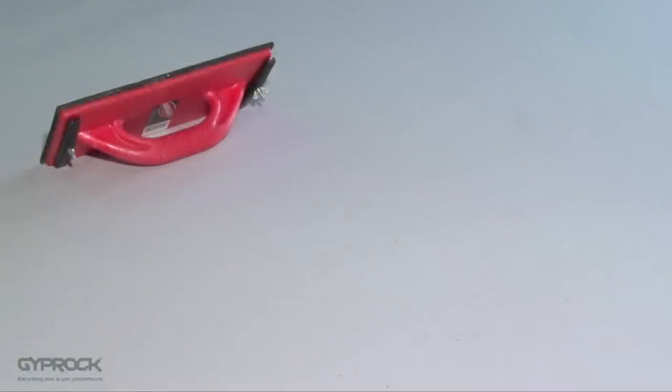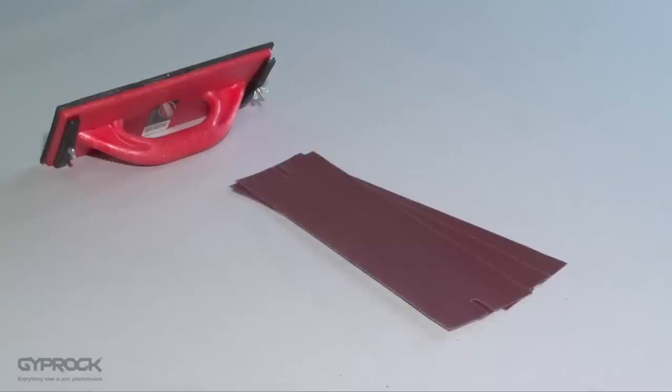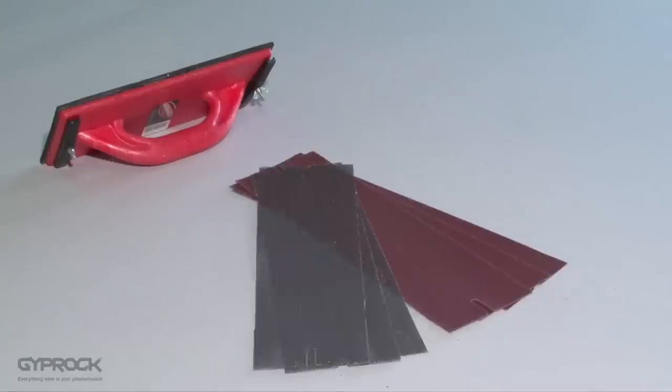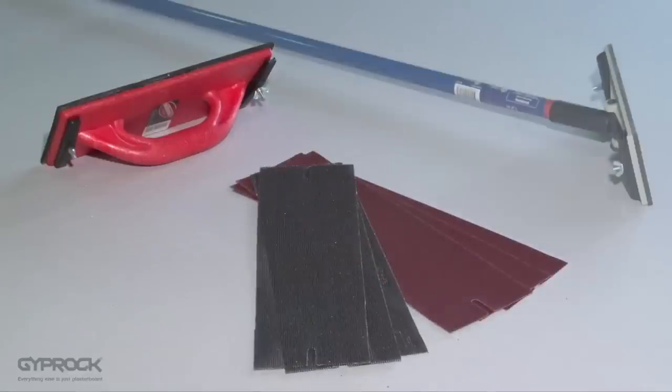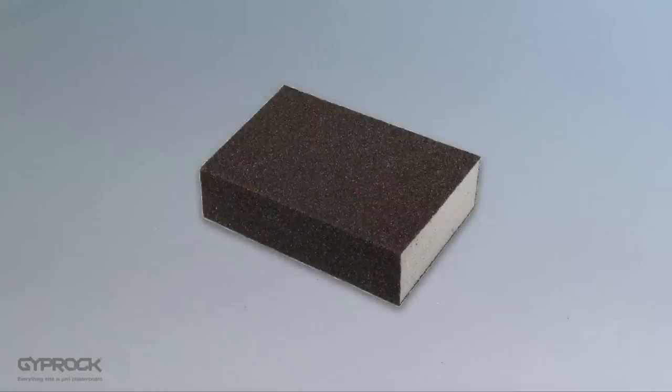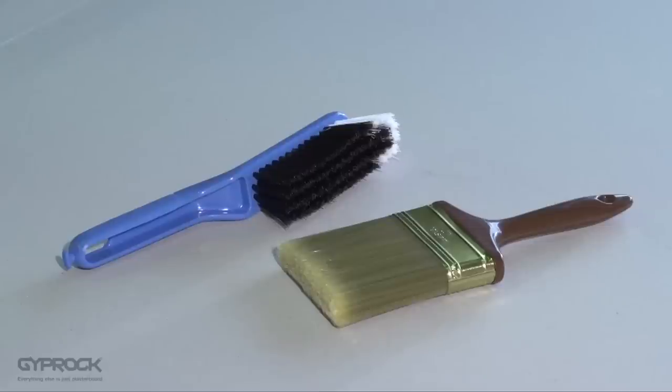You'll also need a sanding float, either 150 grit sandpaper or 220 grit sanding mesh, a pole sander or working platform for ceilings. If you're only working on a small repair project, a sanding block will do the trick and a soft brush or cloth.